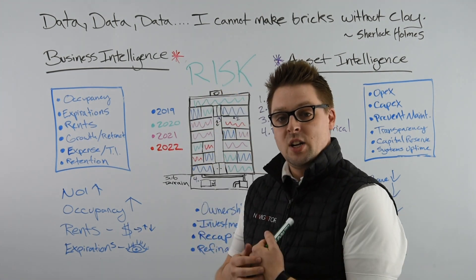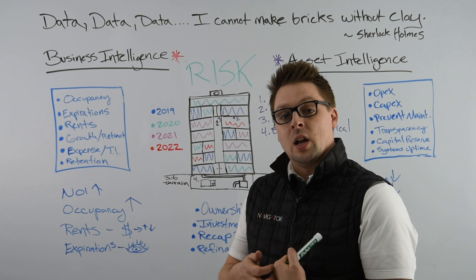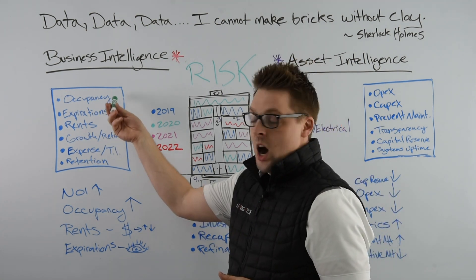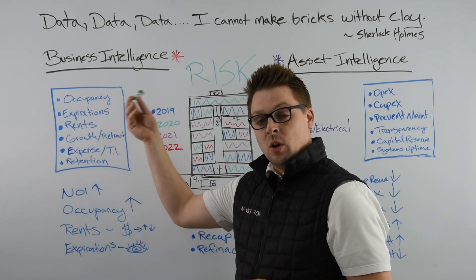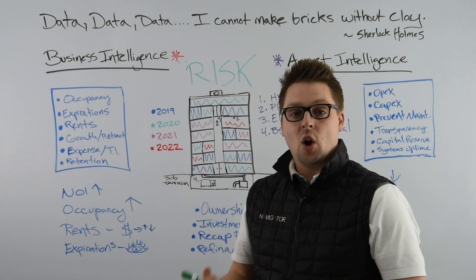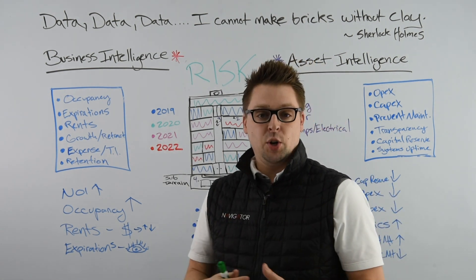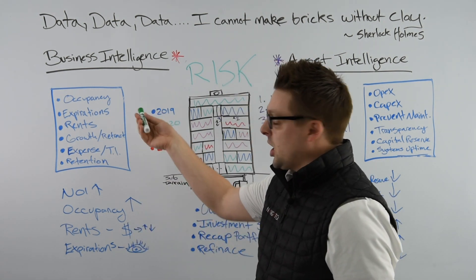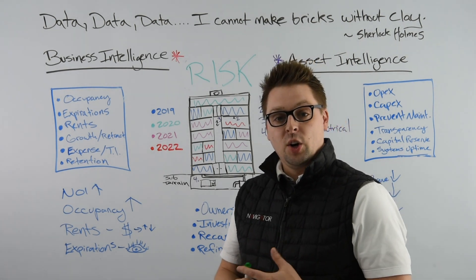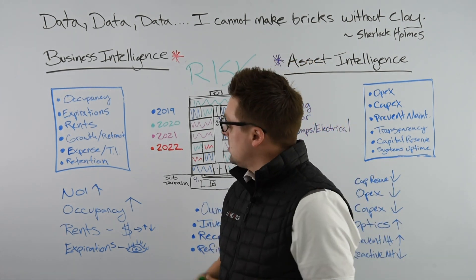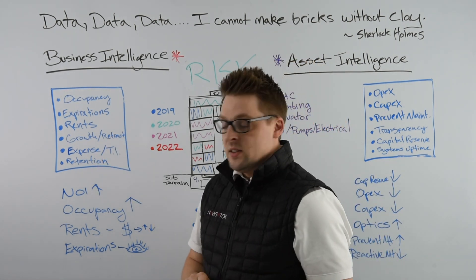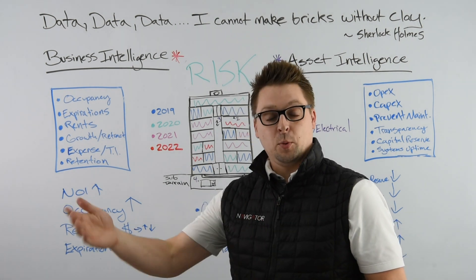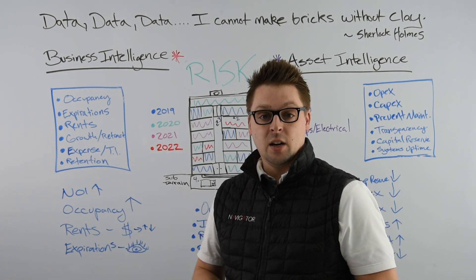What we're going to be focusing on first is how data is utilized in the stack for ownership — understanding your occupancy and your rent roll. Data is actually living in your Yardi and other systems that you're utilizing for your tenancy information: your occupancy, your expirations, your current in-place rents, tenant improvement allowances, expenses, and ultimately your rolling expirations of your tenancy in a building.